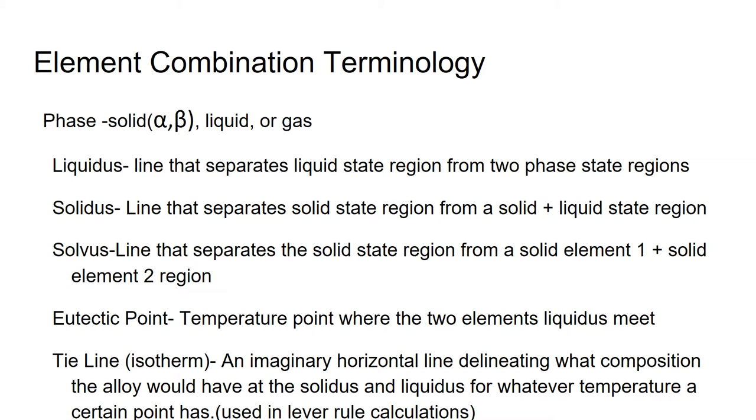In a phase diagram, there's several different phases. The solid phase of both alpha and beta, and the liquid phase, and not usually included, there's a gas phase. Separating these phases are the liquidus, solidus, and solvus line.